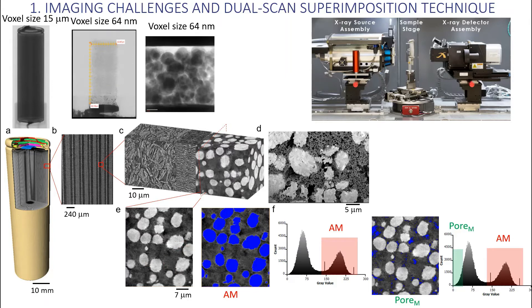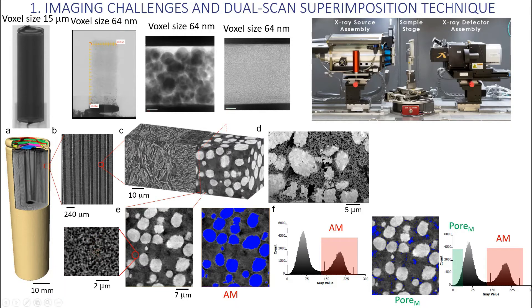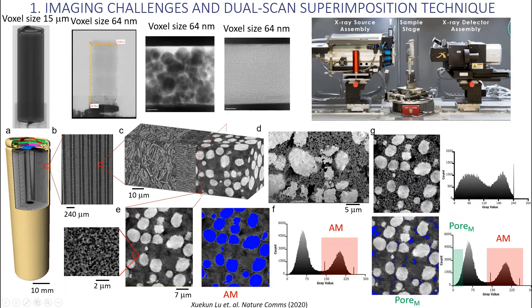We cope with this challenge by using a second scan. We call it the dual scan superimposition technique, with a higher resolution, so we can reconstruct the full details of the CBD phase and replace the original low-resolution region with this data to fully reconstruct the 3D microstructure of the electrode.